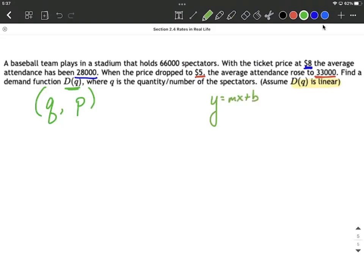But in our case, our variables have changed. Our input is not going to be an X, it's going to be a Q. So over here, I'm going to write M times Q plus B, and our output is going to be a price. So P equals M times Q plus B.